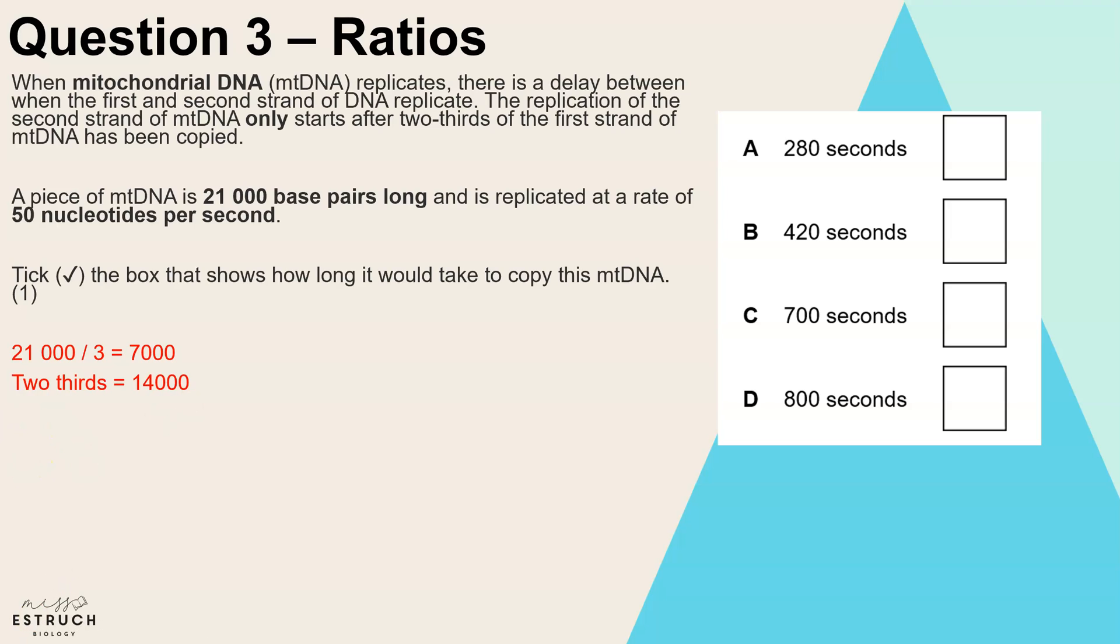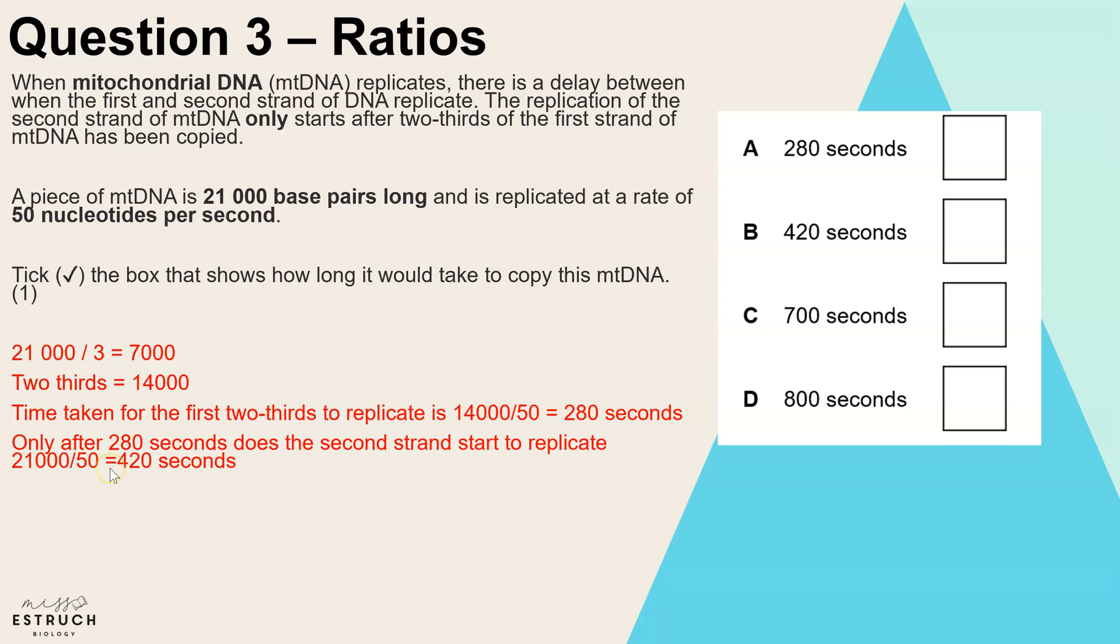We need to know then what is the time taken for the first two-thirds of that first strand to replicate. We're told that the rate is 50 nucleotides per second, so we need to divide 14,000 by 50 and that is 280. So that would be 280 seconds. That is how long the replication is occurring before the second strand even starts to replicate.